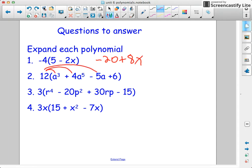We're multiplying this by everything inside. So I would get 12a cubed plus 48a to the exponent 5 minus 60a plus 72.